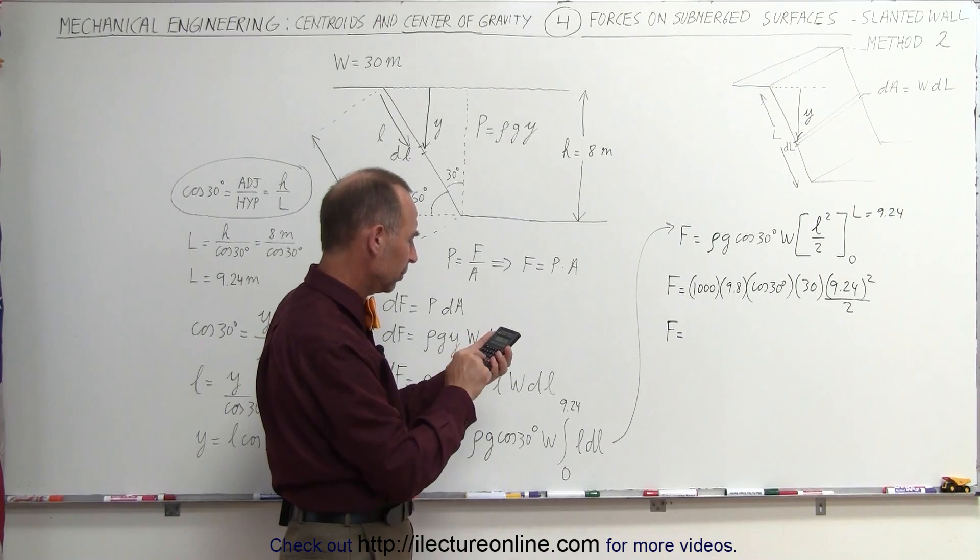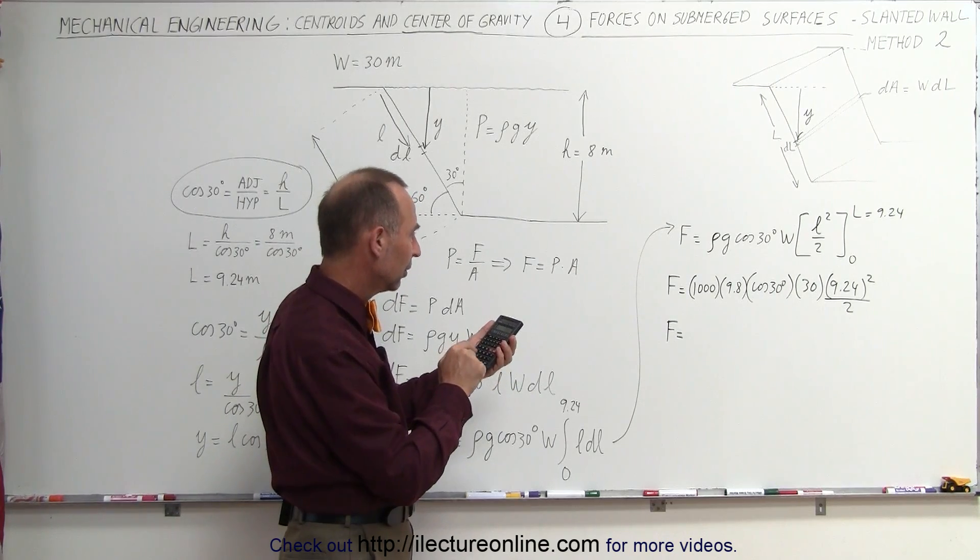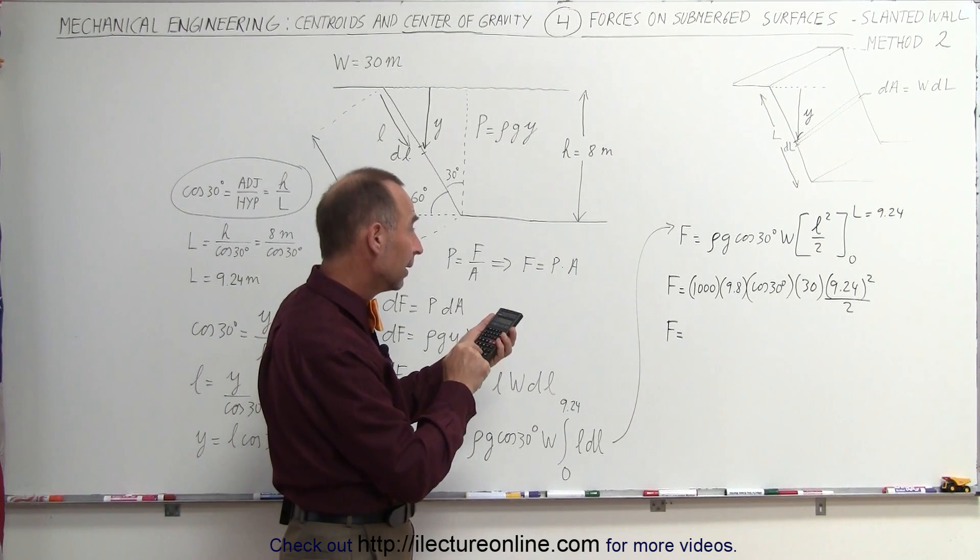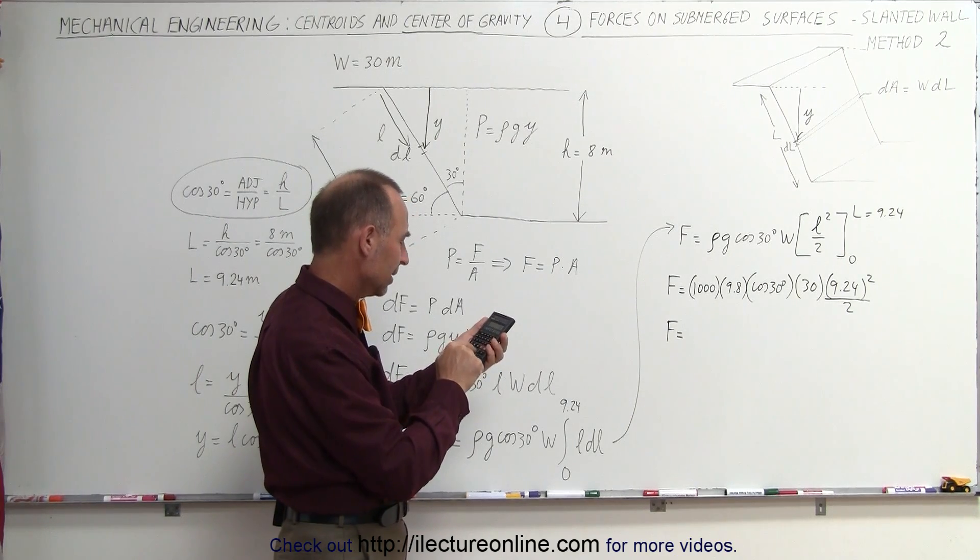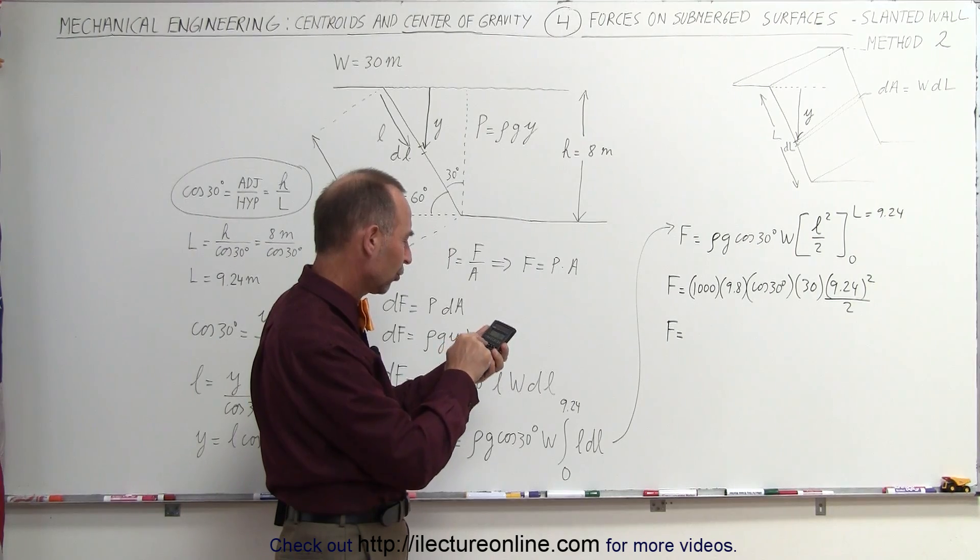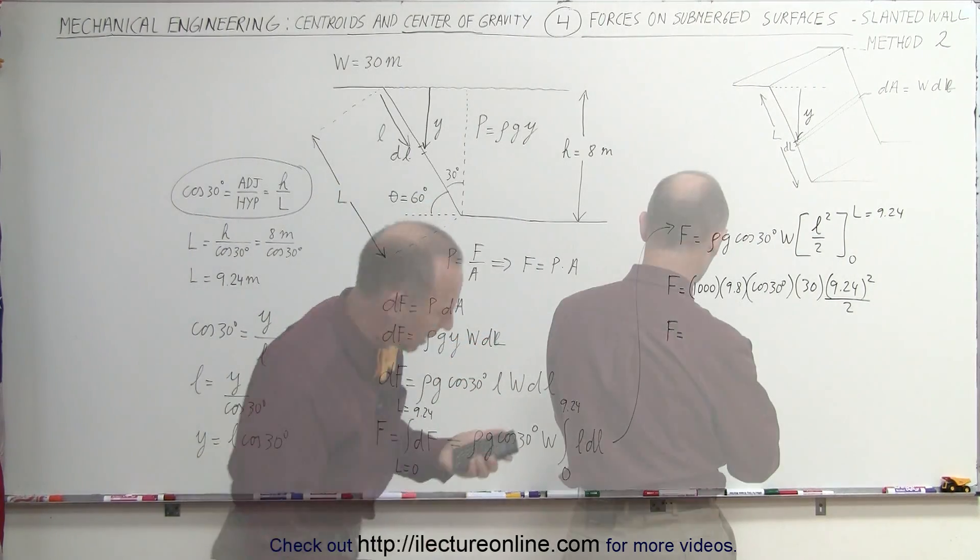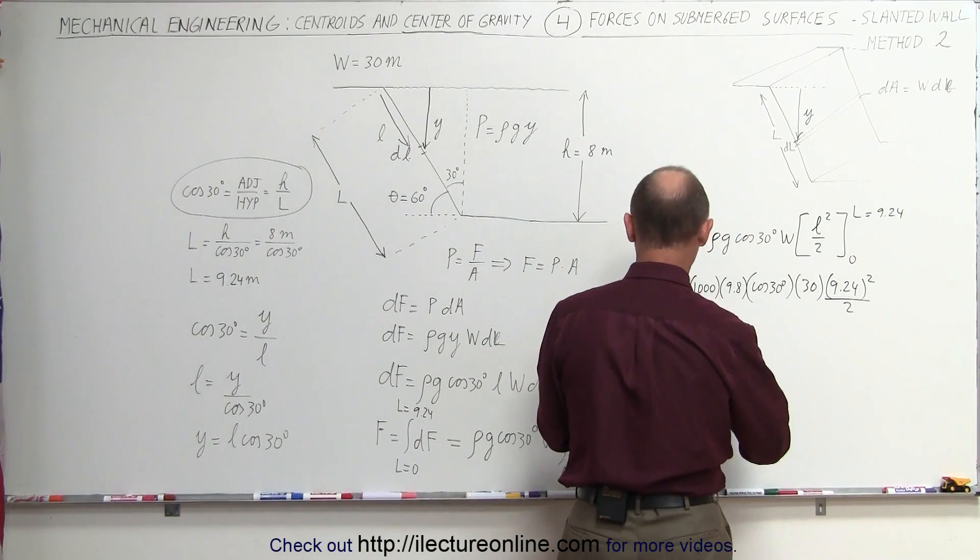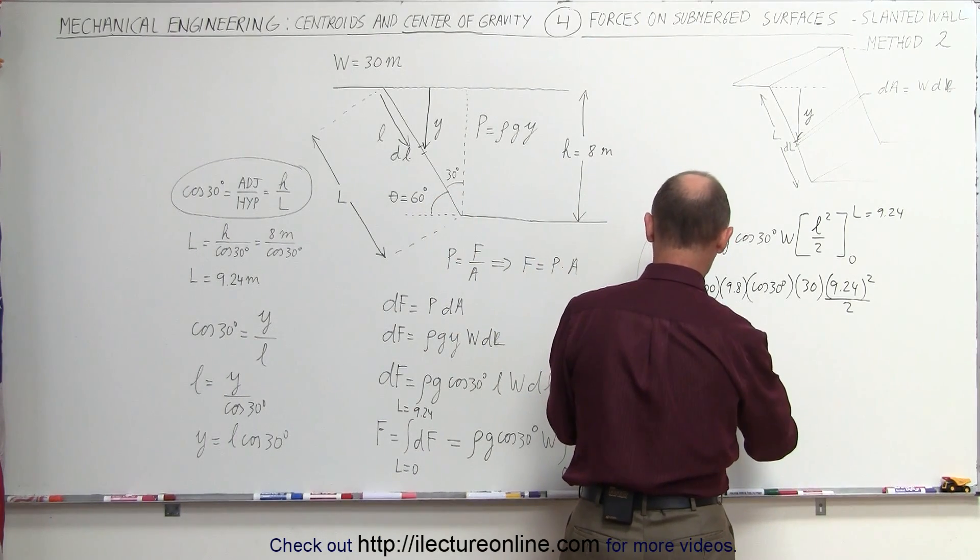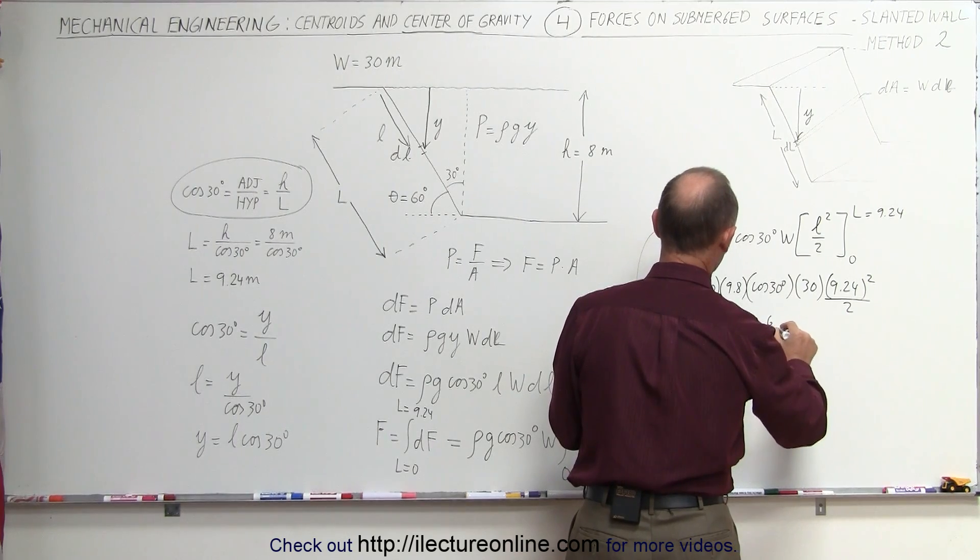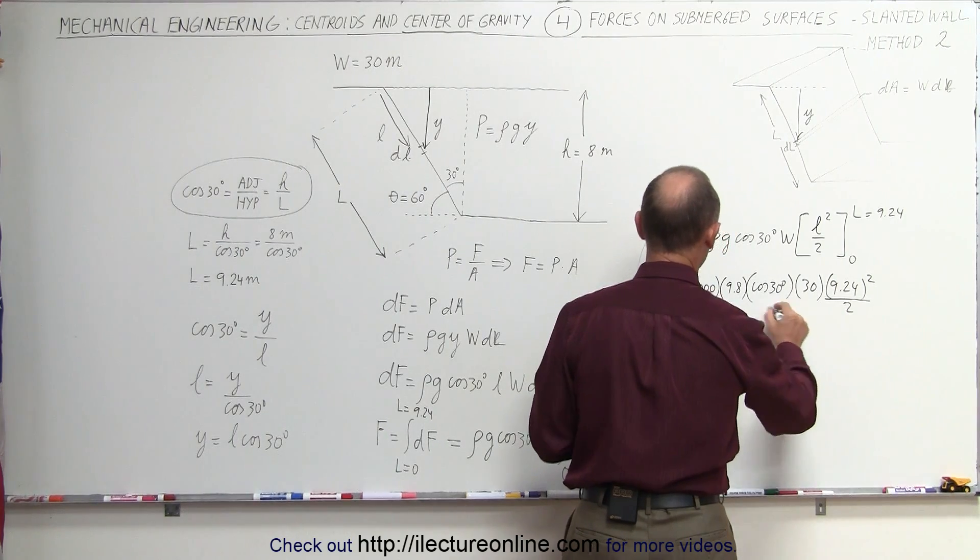9,800 times the cosine of 30 times 30 times 9.24 squared divided by 2 equals the total of 10.87 times 10 to the sixth. And the force would be in newtons.